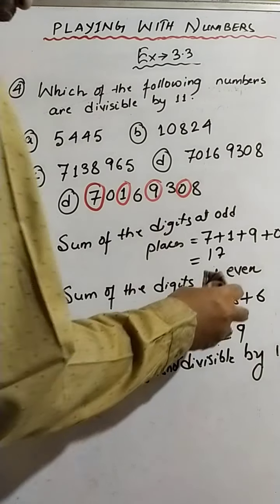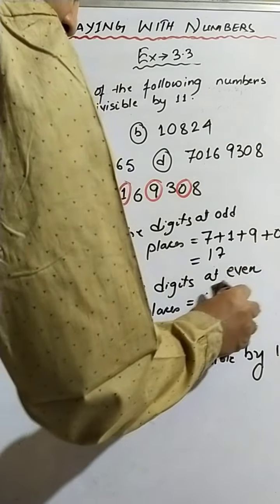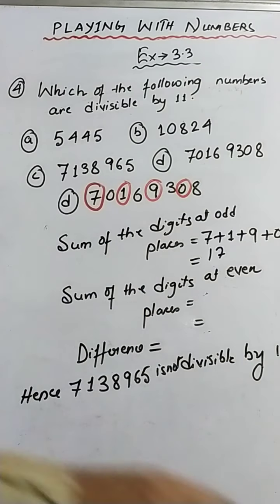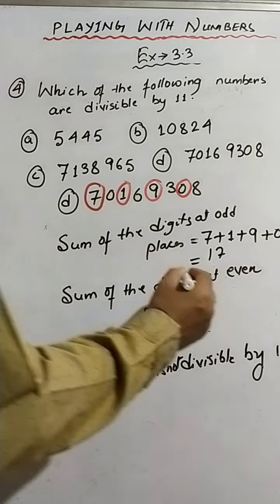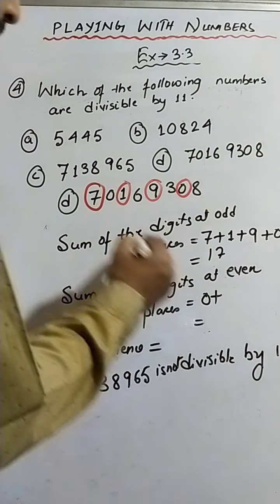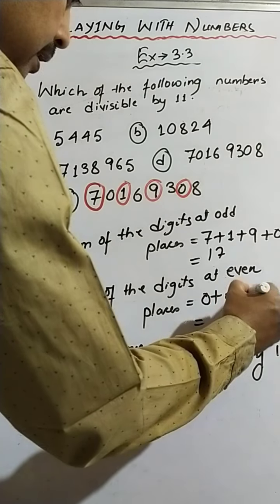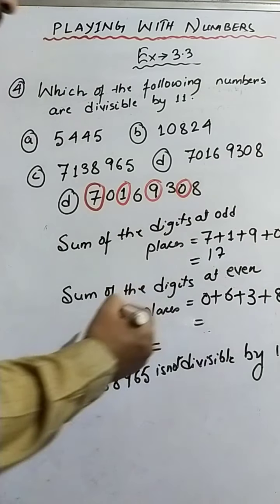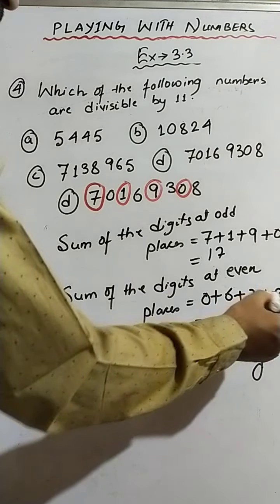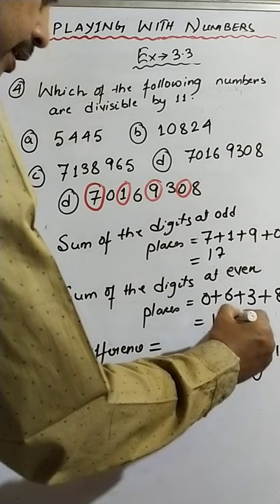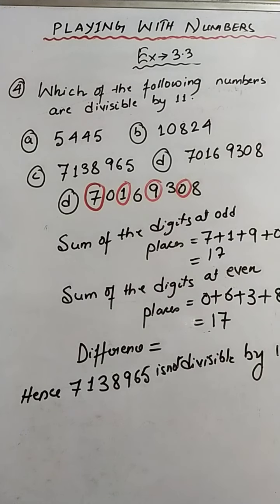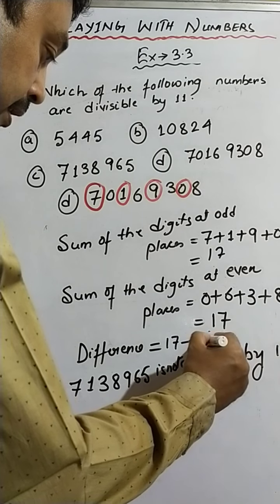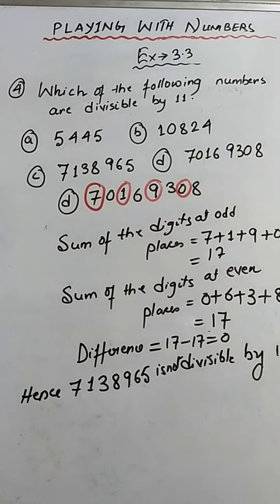Now the digits at even places: 0 plus 6 plus 3 plus 8. So 6 plus 3 is 9, and 9 plus 8 is 17. The difference is 17 minus 17, which is 0.